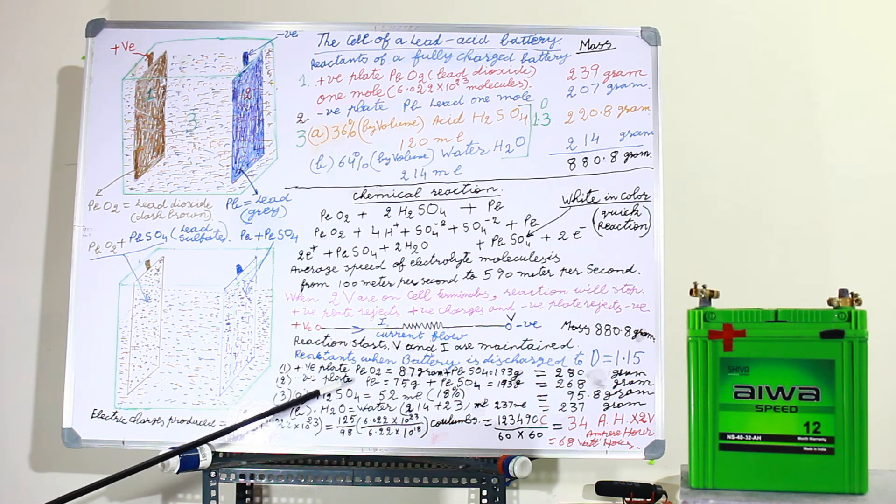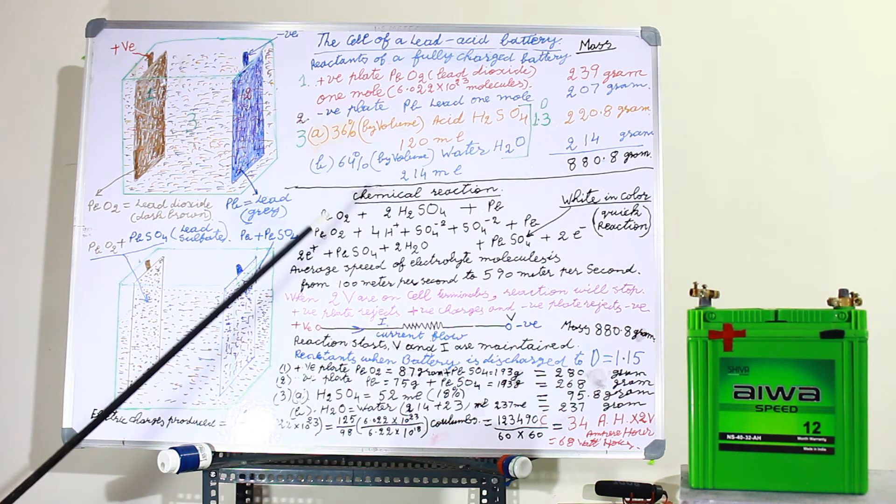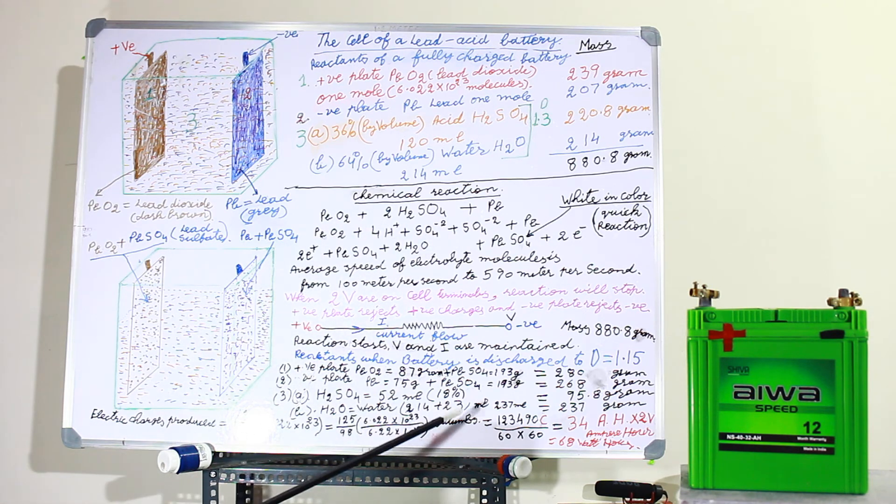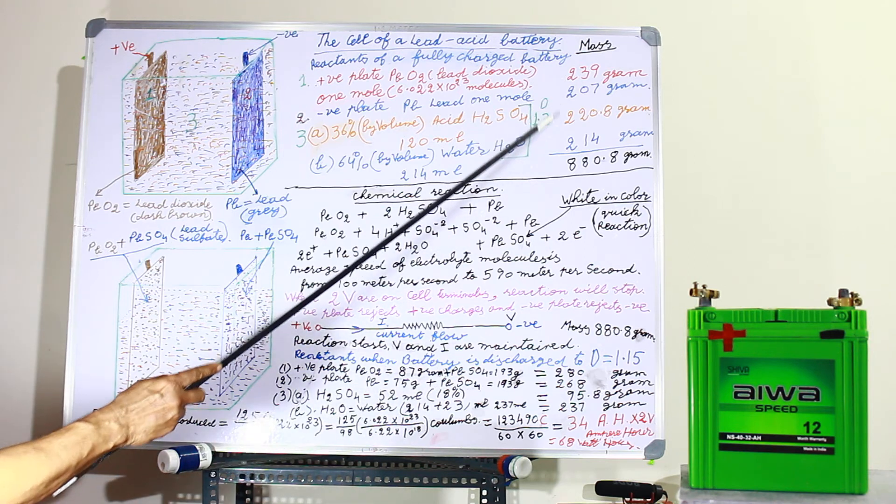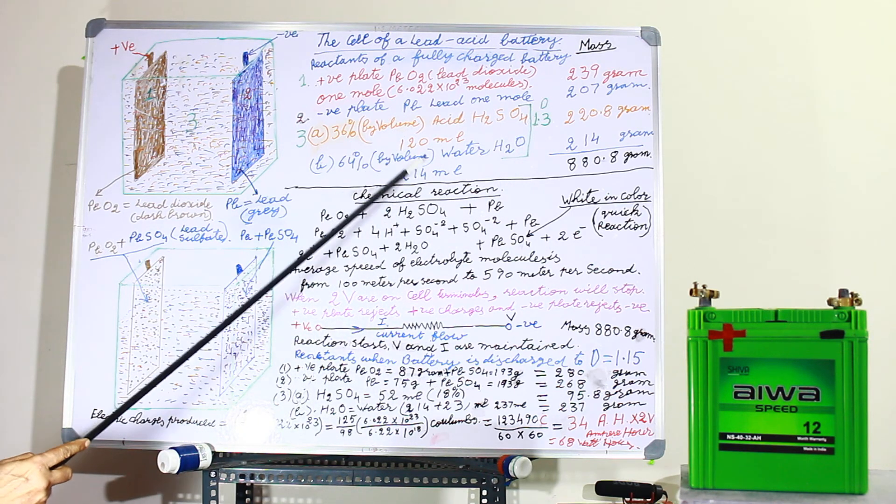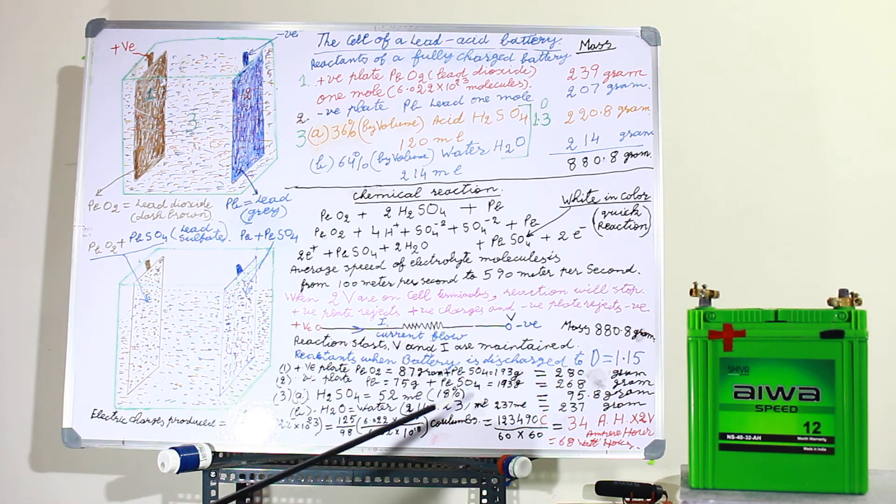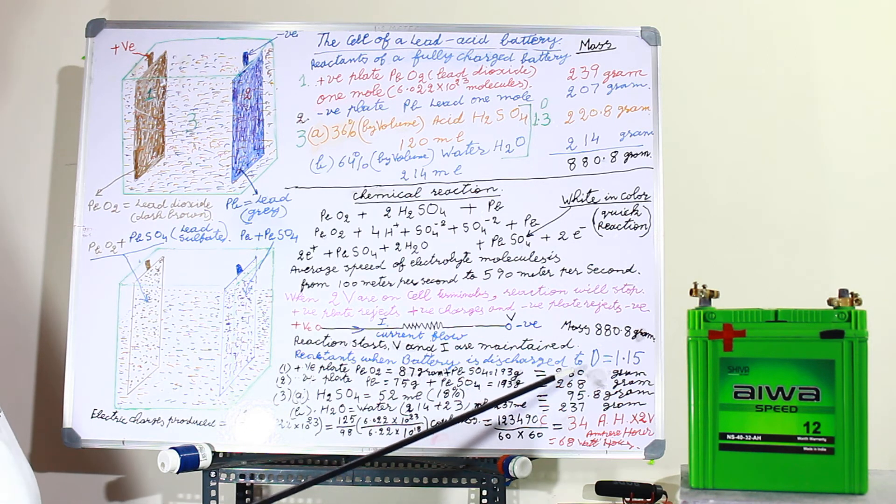H2SO4 will become less. So the density of this electrolyte will go down to 1.15. At that time the H2SO4 will come to 52 milliliters from 120 milliliters. It will become 18 percent. And there will be some H2O added, that will be 23 grams. The result will be 214 milliliters plus 23, resulting in 237 milliliters. But this liquid will become a little less. 237 plus 52 will be 289. So the level of the liquid will go down in it.